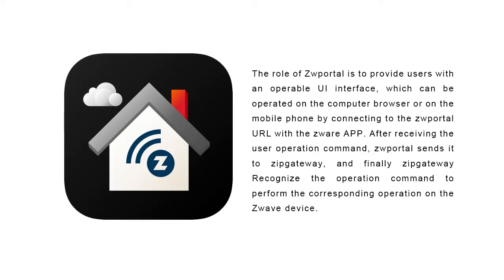The main functions of Z-Portal: the role of Z-Portal is to provide users with an operable user interface, which can be operated on the computer browser or on the mobile phone by connecting to the Z-Portal URL with the Z-Ware app. After receiving the user operation command, Z-Portal sends it to Z-IP Gateway, and finally Z-IP Gateway recognizes the operation command to perform the corresponding operation on the Z-Wave device.